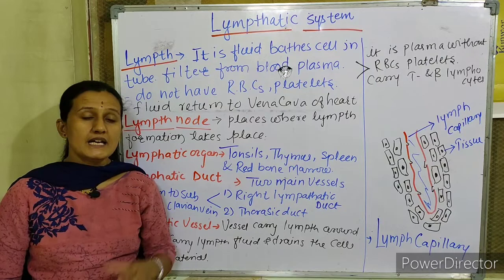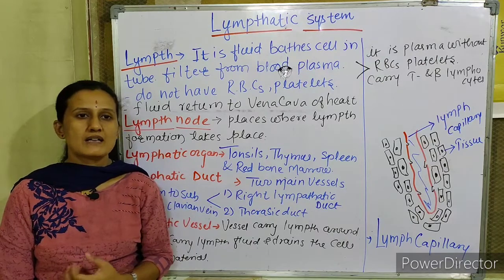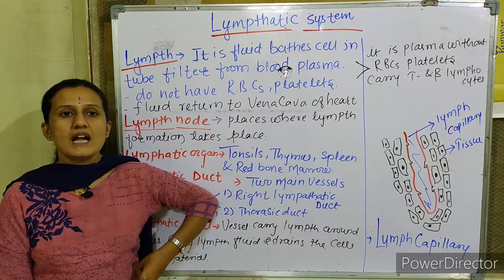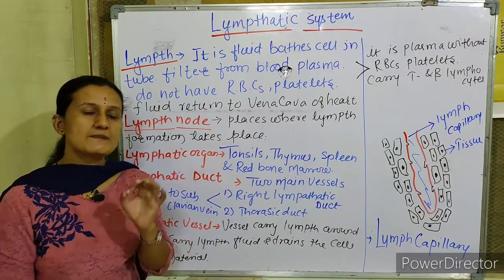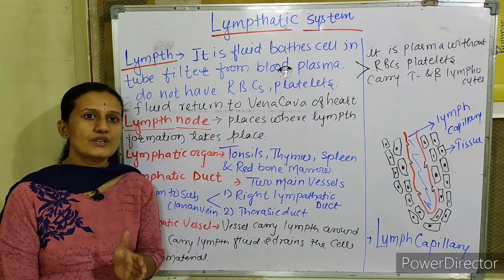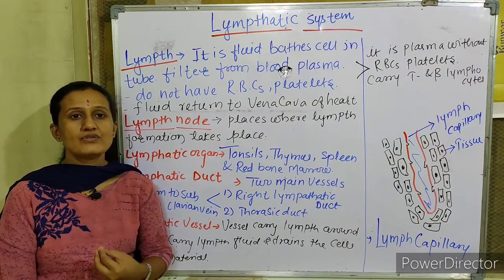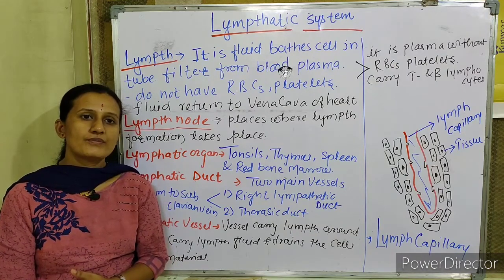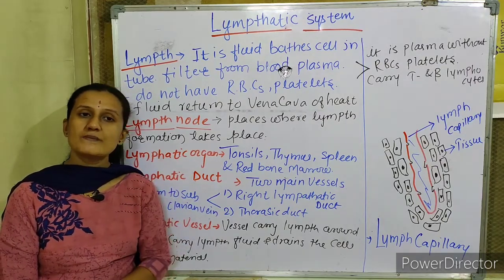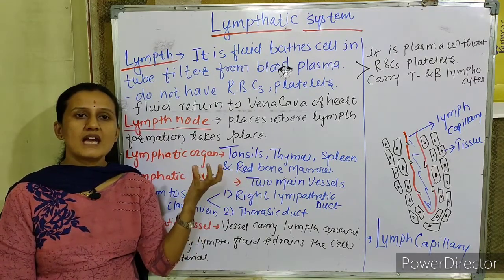The spleen is present on the left side of the body at the ninth to eleventh ribs, on the left upper side near the stomach. It is one of the largest lymphatic organs of the body and is a reservoir of blood. During surgery or accidents it can provide one to one-point-two liters of blood to the body. The old RBCs are decomposed in the spleen, making it one of the main waste-carrier organs.